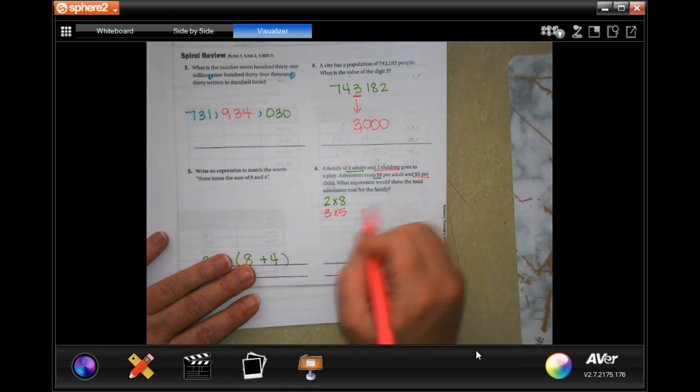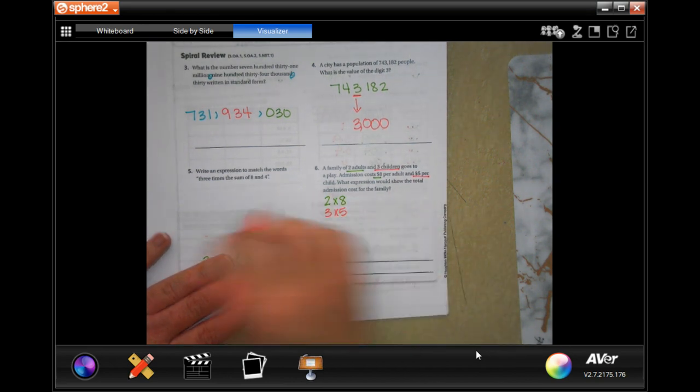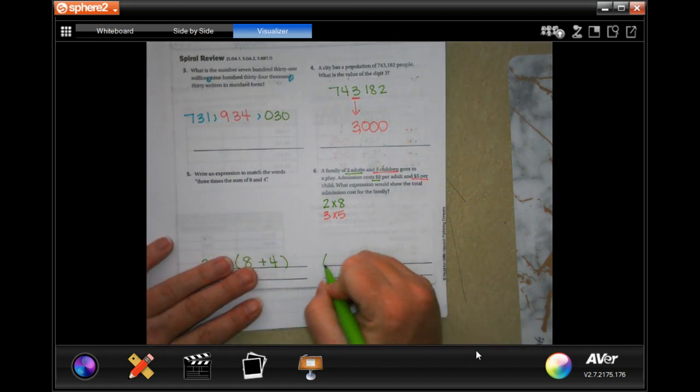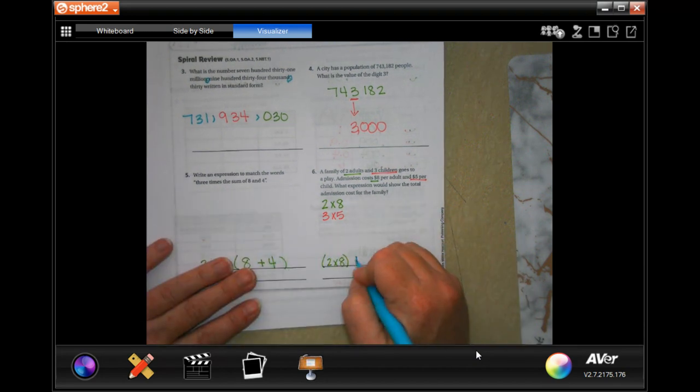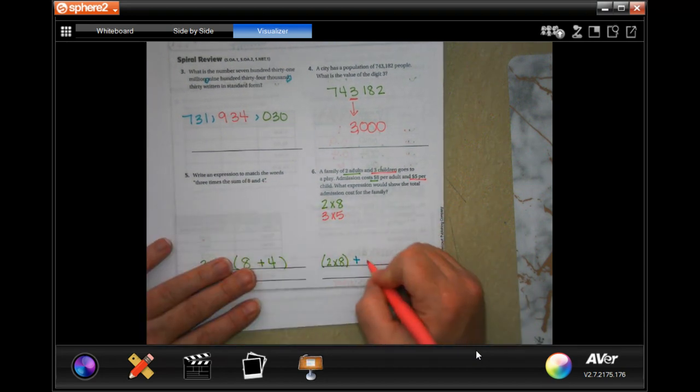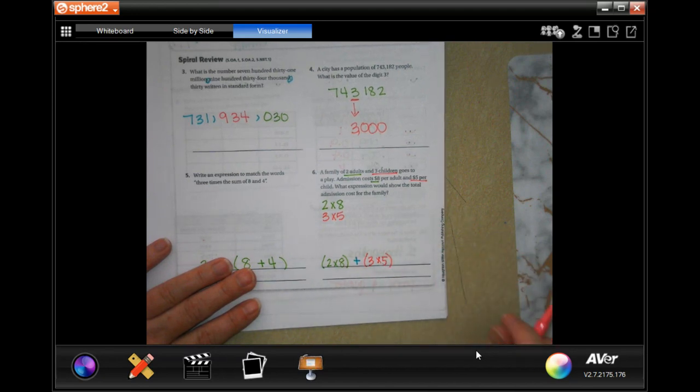Write an expression to show the admission cost for the family. So you're going to have two times eight plus three times five. There's your expression, all done guys.